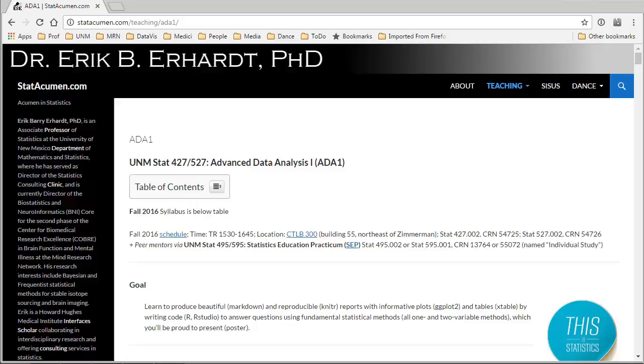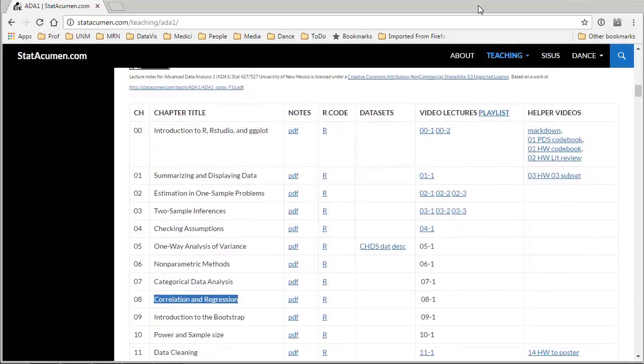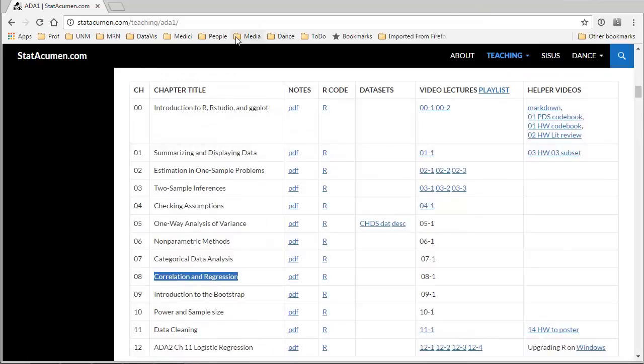Welcome to Advanced Data Analysis 1 with me, Eric Earhart, Professor of Statistics at the University of New Mexico. In this video we will continue Chapter 8 and talk about the correlation coefficient, testing whether it's equal to zero or not, and start into linear regression.